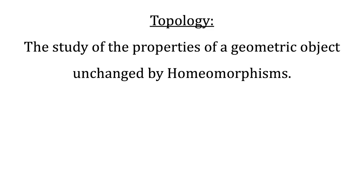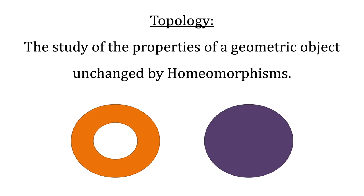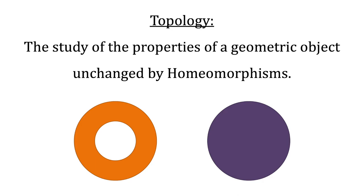Topology is the study of the properties of a geometric object unchanged by homeomorphisms. An example of this is the number of holes an object has. No matter how much we twist and distort an object with a hole in it, there is no way to reshape it into an object without a hole. Holes are a topological property, unchanged by homeomorphisms.